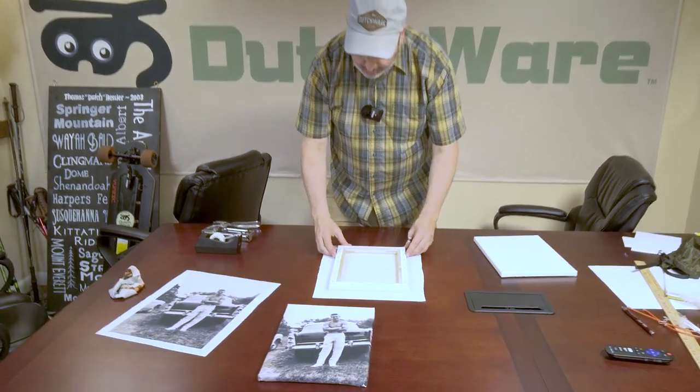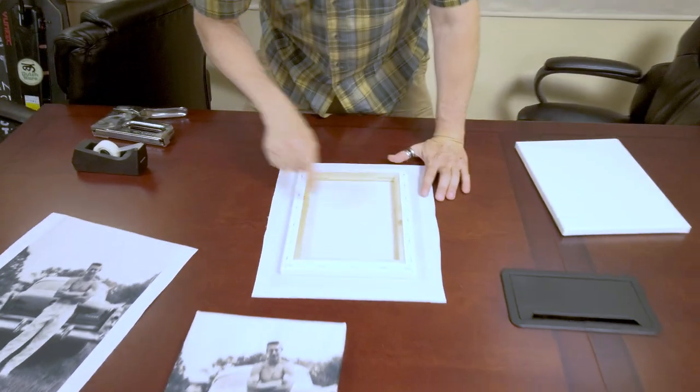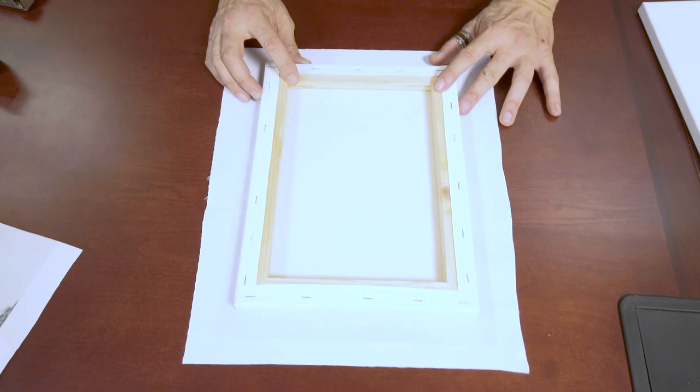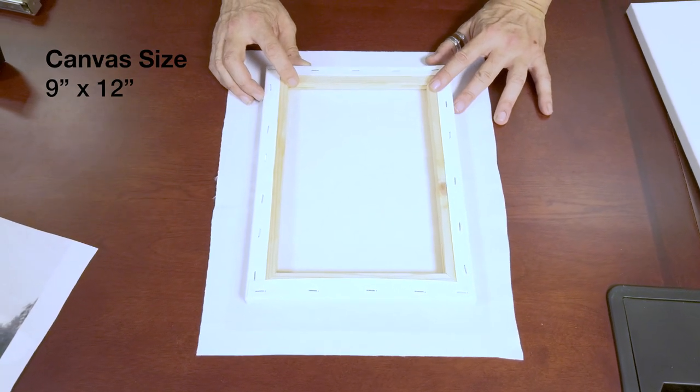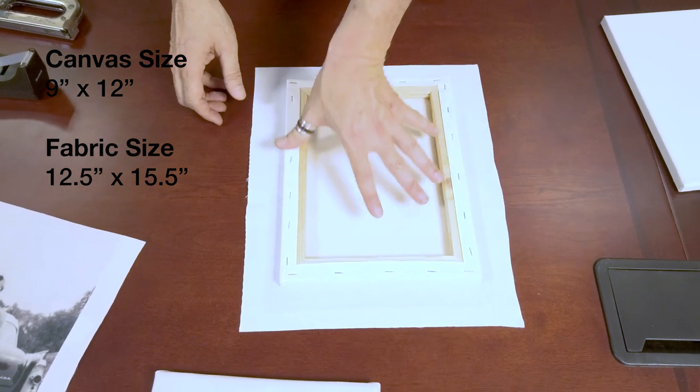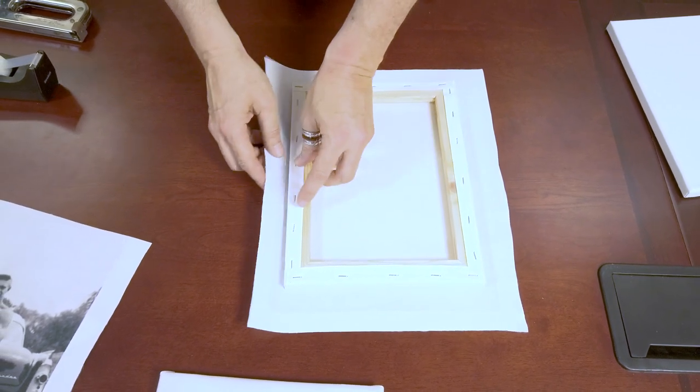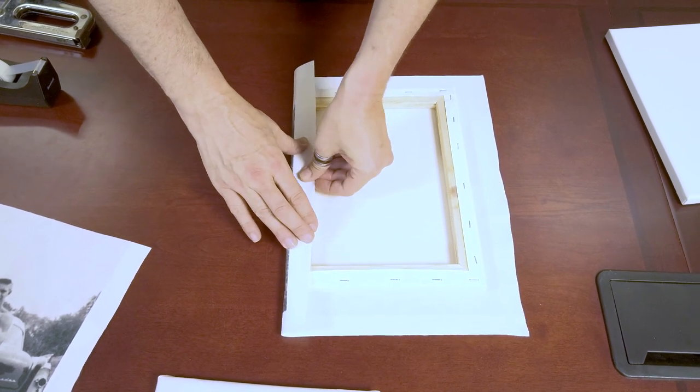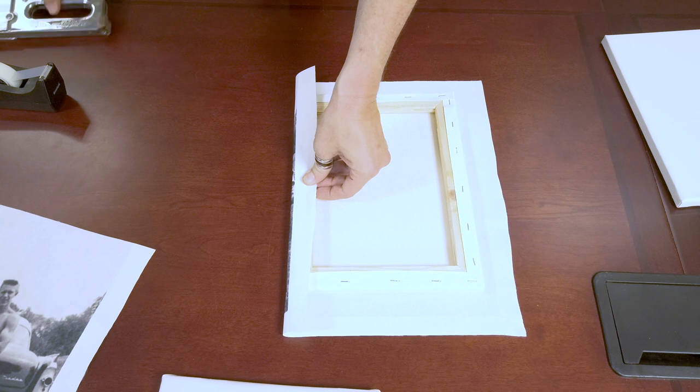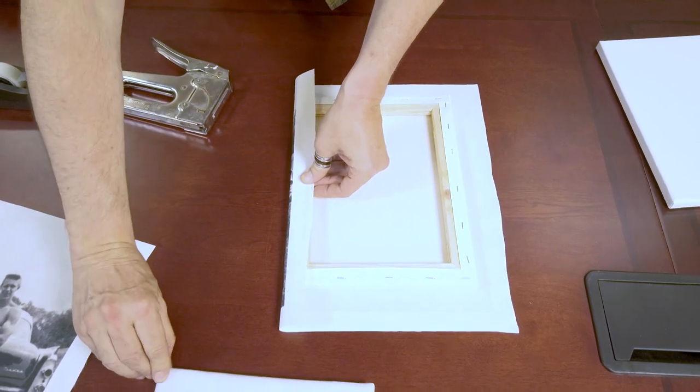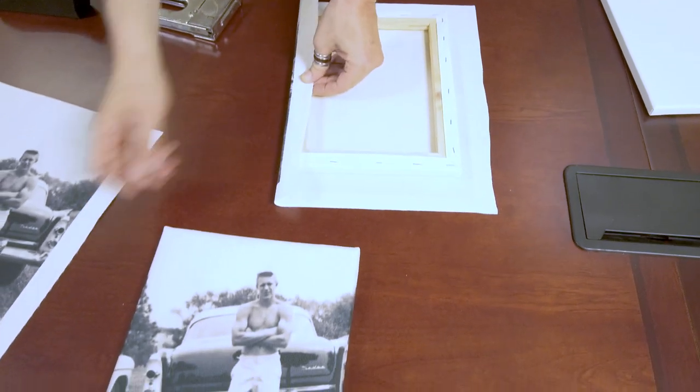Luckily the print comes through enough that I can square it up on the back side and see right where I want to put the frame. Then I'm going to fold up. I like to do the sides first. I like the folded area to be on the top and bottom because it's harder to see than on the side.